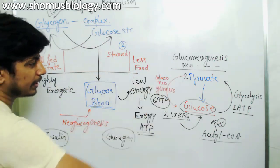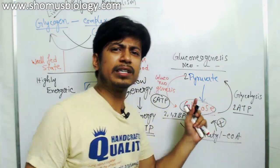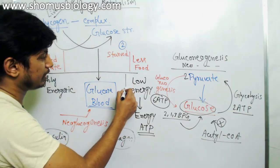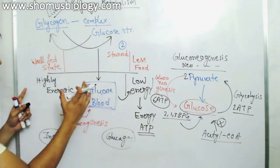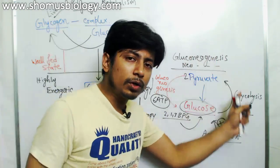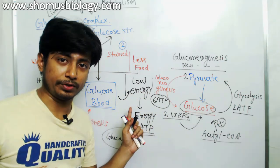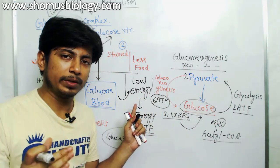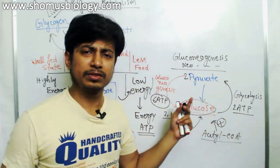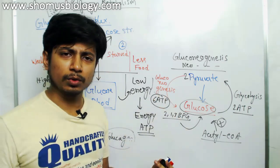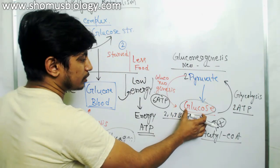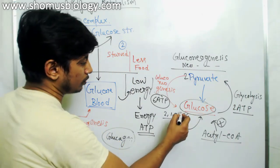Once we get energy sources again, we replenish that. It's important to note that neoglucogenesis doesn't always work only in the low energy state — the idea of low and high energy state is specifically for glycogen breakdown and synthesis. Neoglucogenesis is linked with blood glucose level concentration. Whenever blood glucose level goes down, glucagon signals the process of neoglucogenesis, and the body also tries to generate glucose by breaking down glycogen.